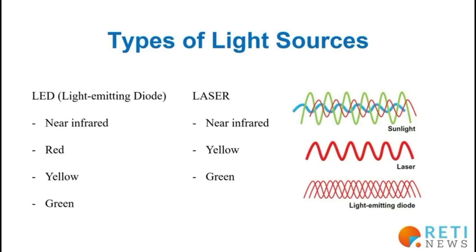The main light sources for photobiomodulation are LEDs and lasers. The LED, which stands for light-emitting diode, can have its wavelength ranging from near red through red, yellow, and green. The laser can also be found in wavelengths near infrared, yellow, and green. The difference between the laser and the LED is that in the laser the light is coherent, whereas in the LED there is no coherence in the light stimulus.